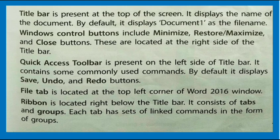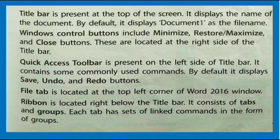The Title Bar is present at the top of the screen. It displays the name of the document; by default it displays Document 1 as the file name. Windows control buttons include Minimize, Restore or Maximize, and Close buttons, located at the right side of the Title Bar. The Quick Access Toolbar is present on the left side of the Title Bar and contains commonly used commands — by default it displays Save, Undo, and Redo buttons.